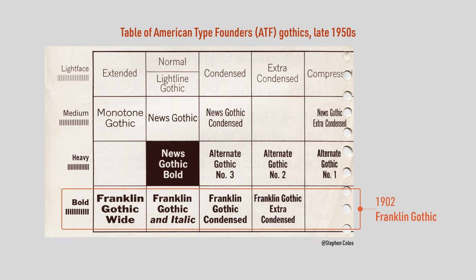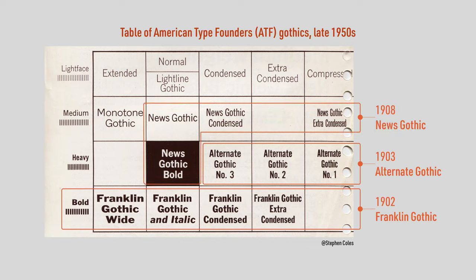This table of ATF Gothics from the 1950s illustrates the situation nicely. In 1902, type designer Morris Fuller Benton created Franklin Gothic for American Type Founders in just one extra bold display weight. Then in 1903, he designed Alternate Gothic, a compressed and moderately bold version of Franklin Gothic that was made available in three numbered widths. Finally, in 1908, he designed News Gothic, which is a lightweight version of Franklin Gothic that could be used as body text. So when I say Franklin Gothic, what I'm really referring to is this triad — hence three fonts in a trench coat. Monotone Gothic and Lightline Gothic from this table both got absorbed into the main Franklin Gothic font as its light weights.